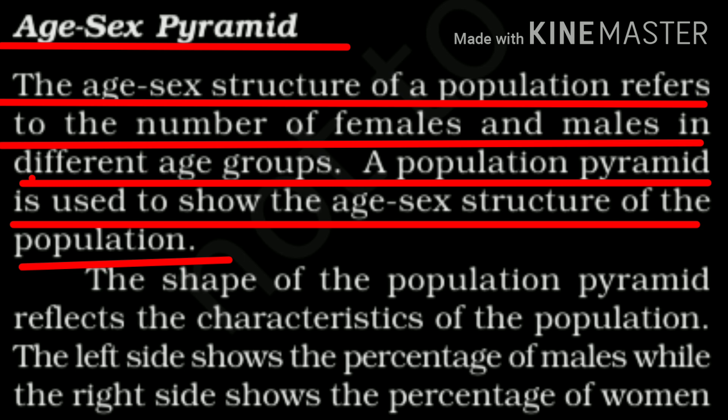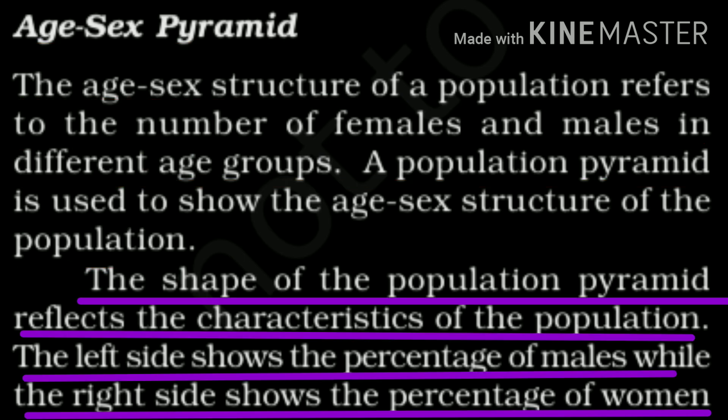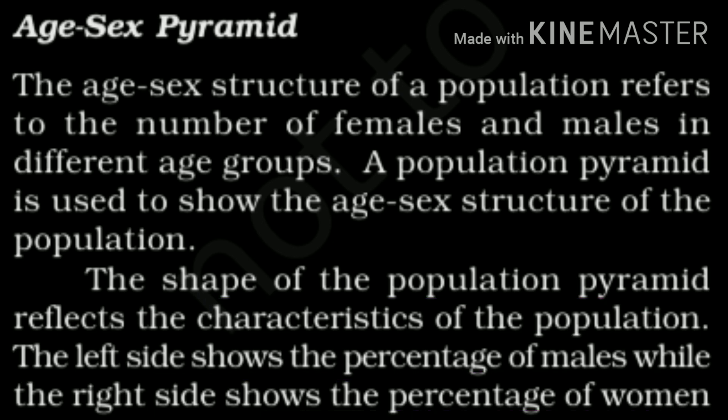The age-sex pyramid. The age-sex structure of a population refers to the number of females and males in different age groups. A population pyramid is used to show the age-sex structure of the population. The shape of the population pyramid reflects the characteristics of the population. The left side shows the percentage of males while the right side shows the percentage of women. In the next slides you will see examples of population pyramids of different countries.